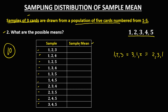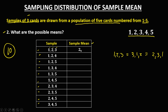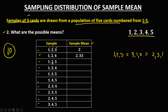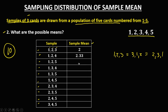To solve for the sample mean, we add the 3 numbers and divide by 3. For 1, 2, 3: 1+2+3=6, divided by 3, the sample mean is 2. For 1, 2, 4: sum is 7, divided by 3, that's 2.33. For 1, 2, 5: sum is 8, divided by 3, that's 2.67. For 1, 3, 4: 1+3+4=8, divided by 3, that's 2.67. For 1, 3, 5: sum is 9, divided by 3, that's 3. For 1, 4, 5: sum is 10, divided by 3, that's 3.33.